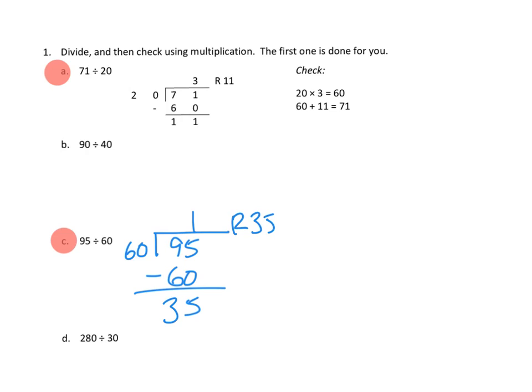I'm going to do our little check over here. We're going to multiply our divisor by our quotient. So 60 times 1, well that's pretty simple, that's 60. And then we need to add back in our remainder, that's 35.